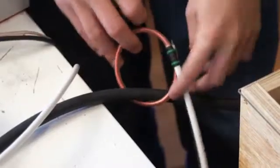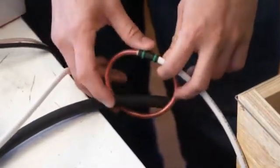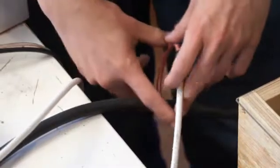Now this current sensor is actually something called a Rogowski coil, it's a flexible current sensor that you can wrap around conductors which are already installed.